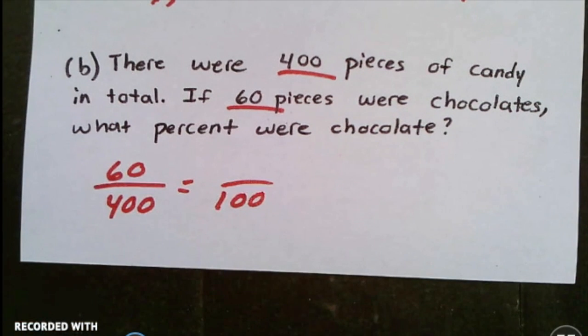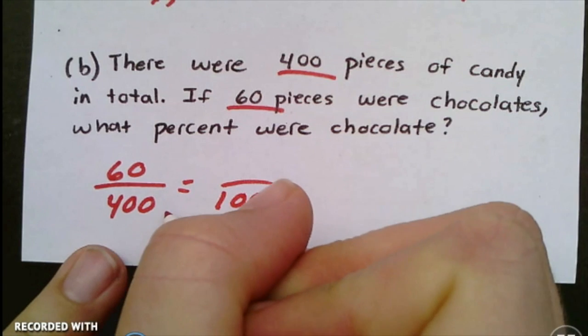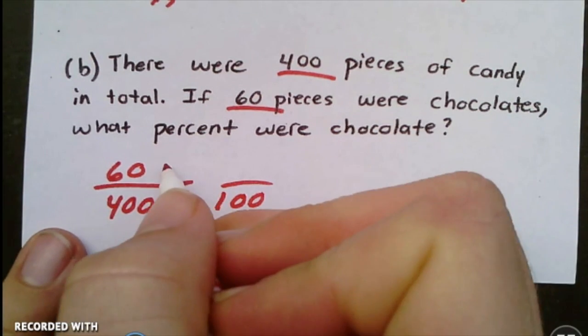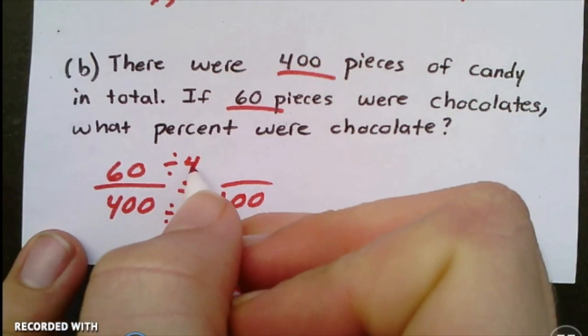This one's interesting because I don't know that we've done a lot of this in class. We're going from 400 to 100, so I'm not going to multiply because that would be bigger than 400. I'm going to need to divide. What can I divide 400 by to get to 100? Right, four.